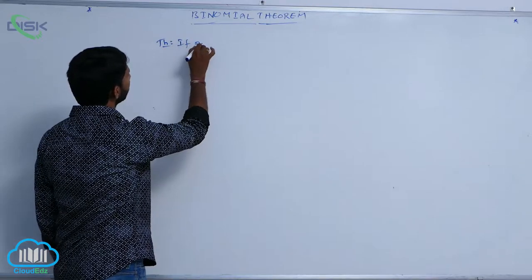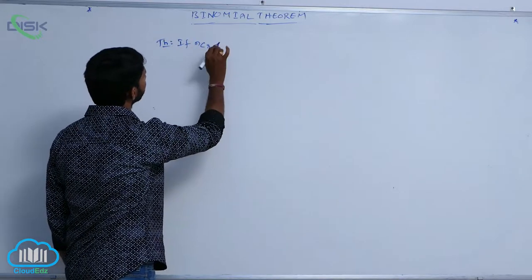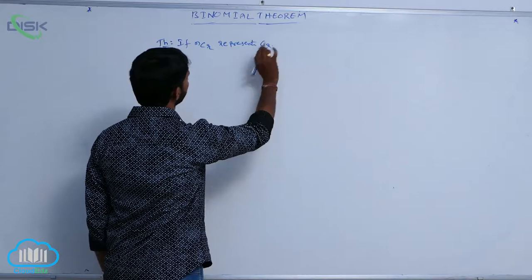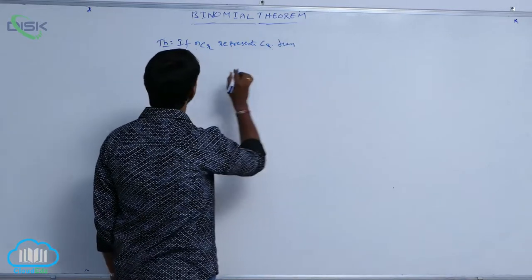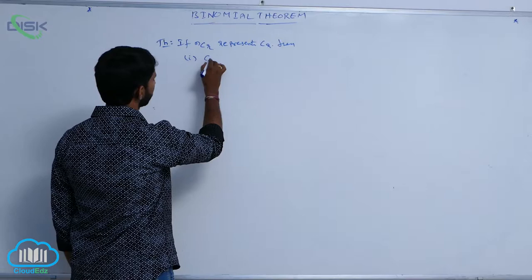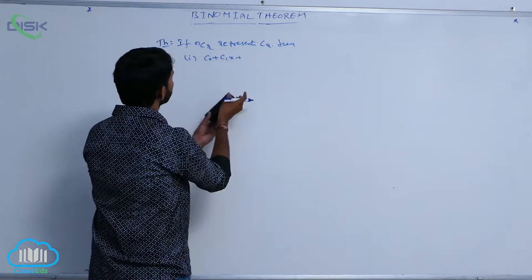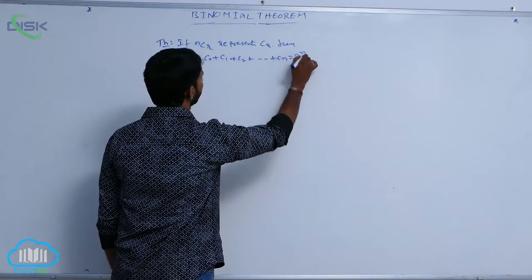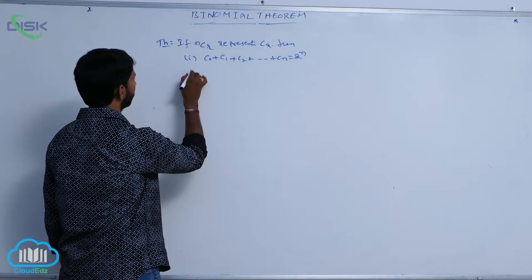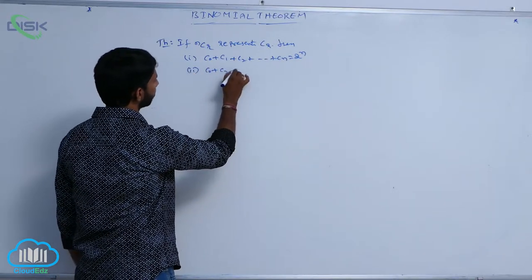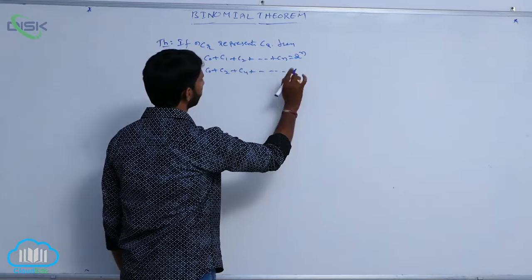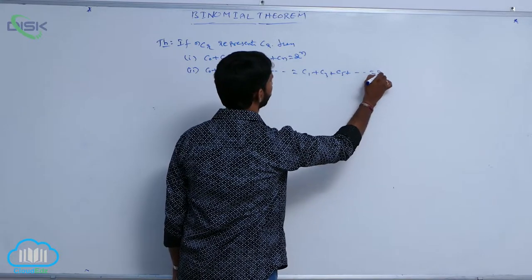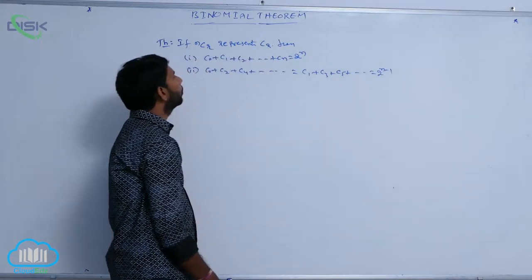Next one. If nCr represents aCr, then: first, C₀ + C₁ + C₂ + ... + Cₙ = 2ⁿ. And second, C₀ + C₂ + C₄ + ... = C₁ + C₃ + C₅ + ... = 2ⁿ⁻¹.